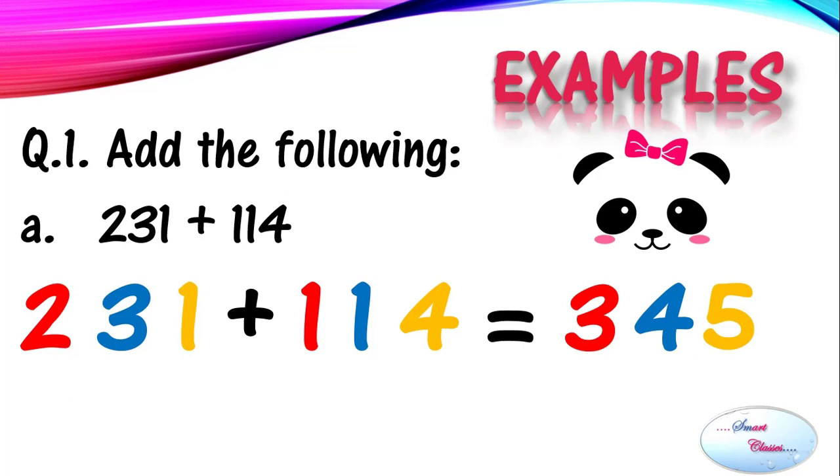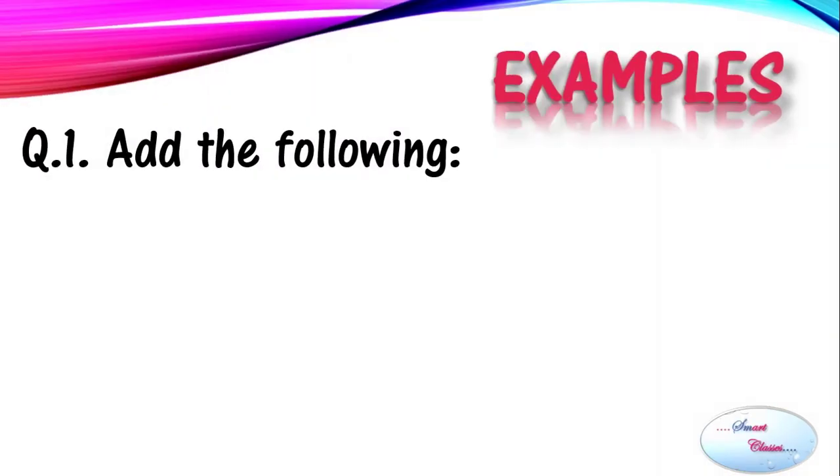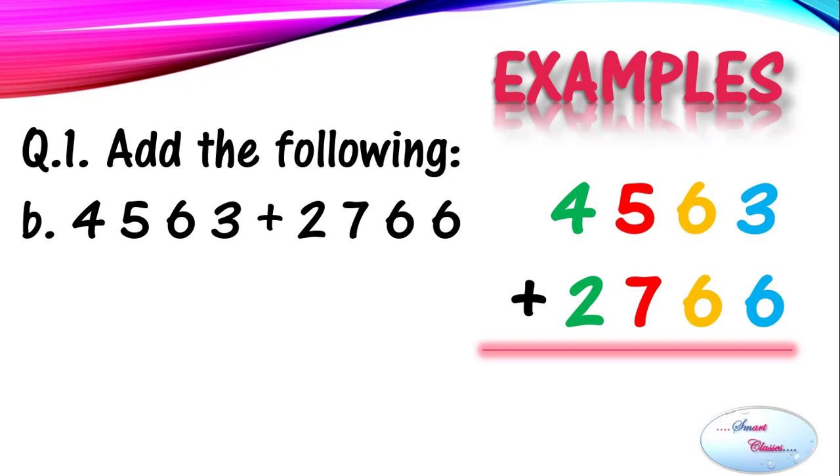Here is one more example. Here the two numbers which we are having for the addition are the larger ones, so we can't follow that rule of horizontal method. Here we will solve it vertically. As we know that in addition, order of numbers doesn't matter, so we can write any number above and any number below it.